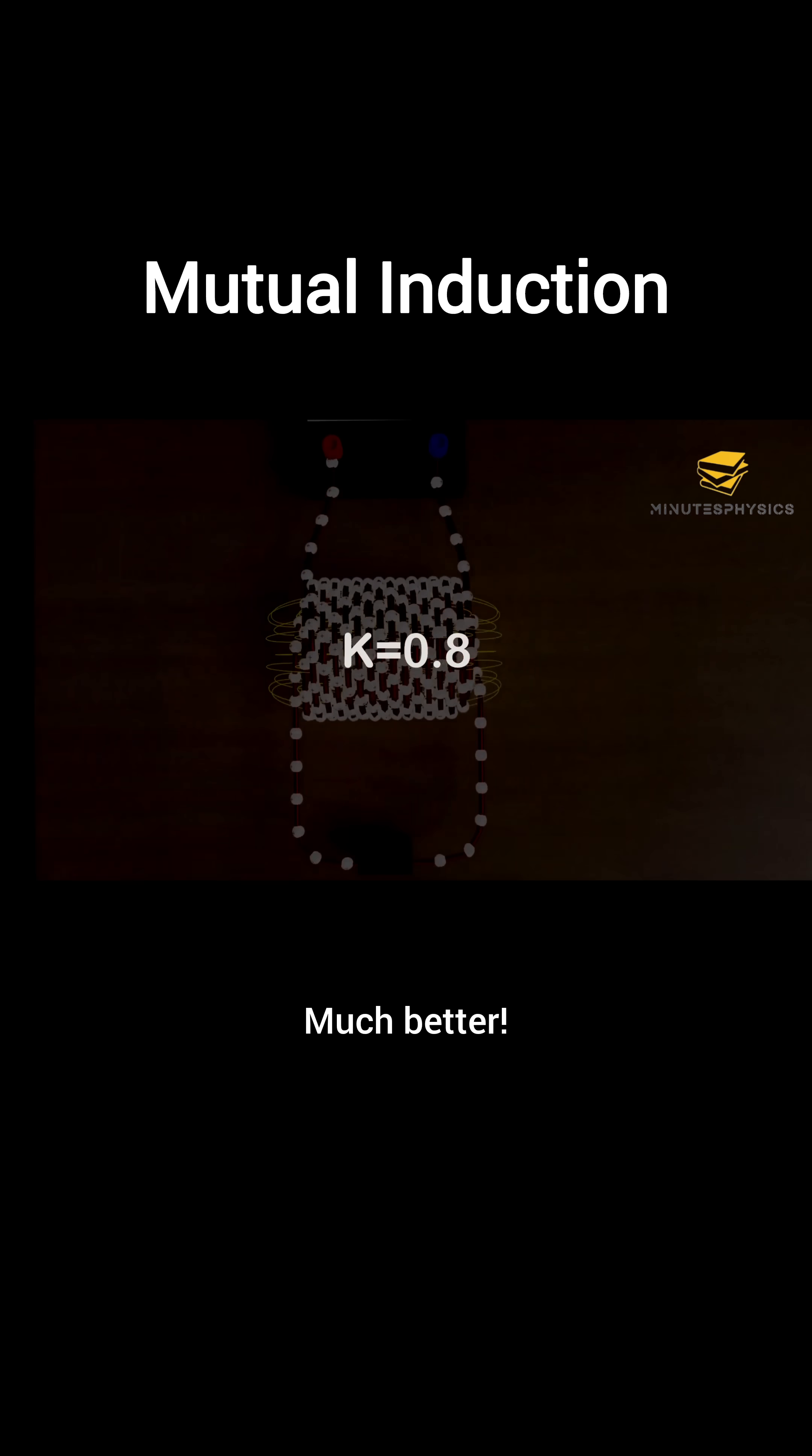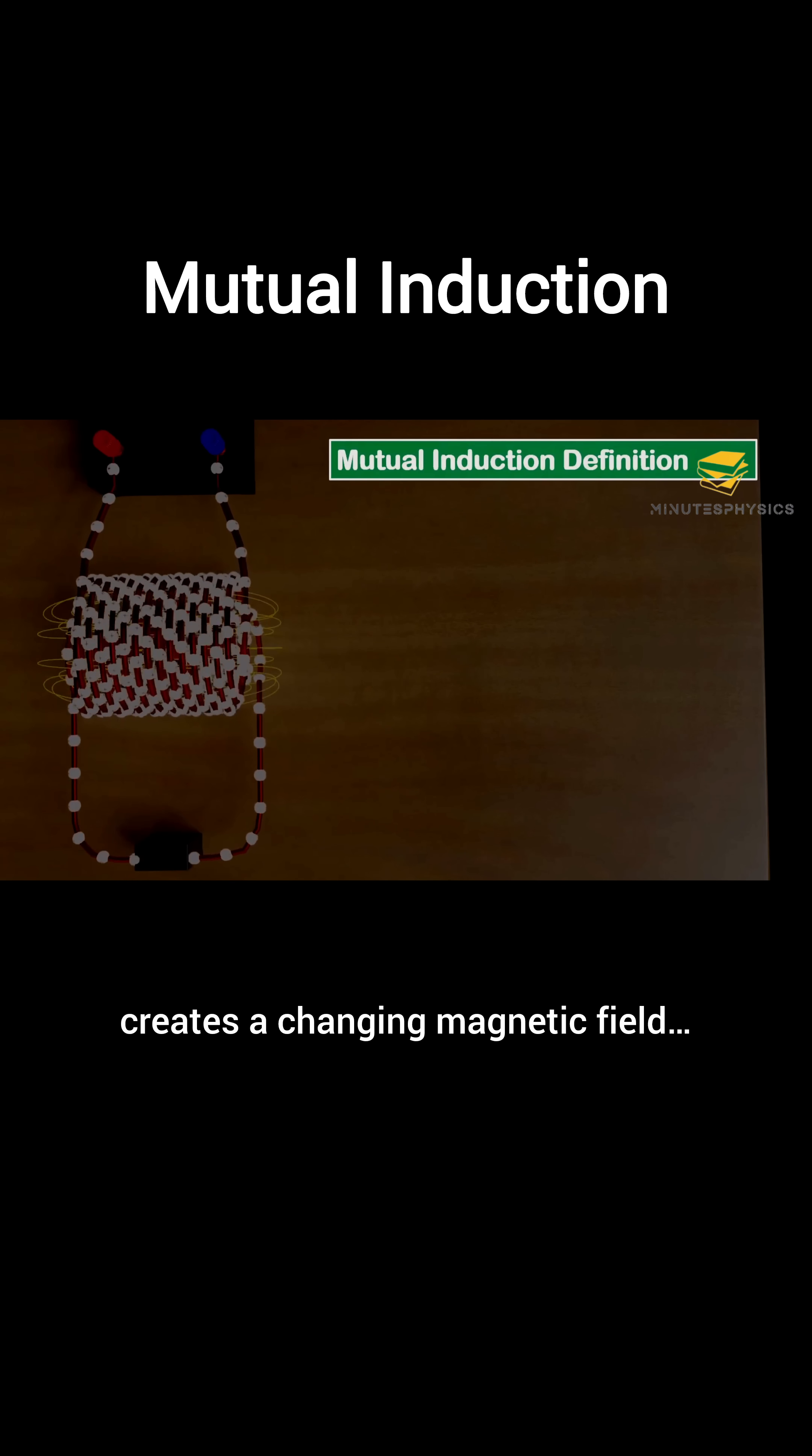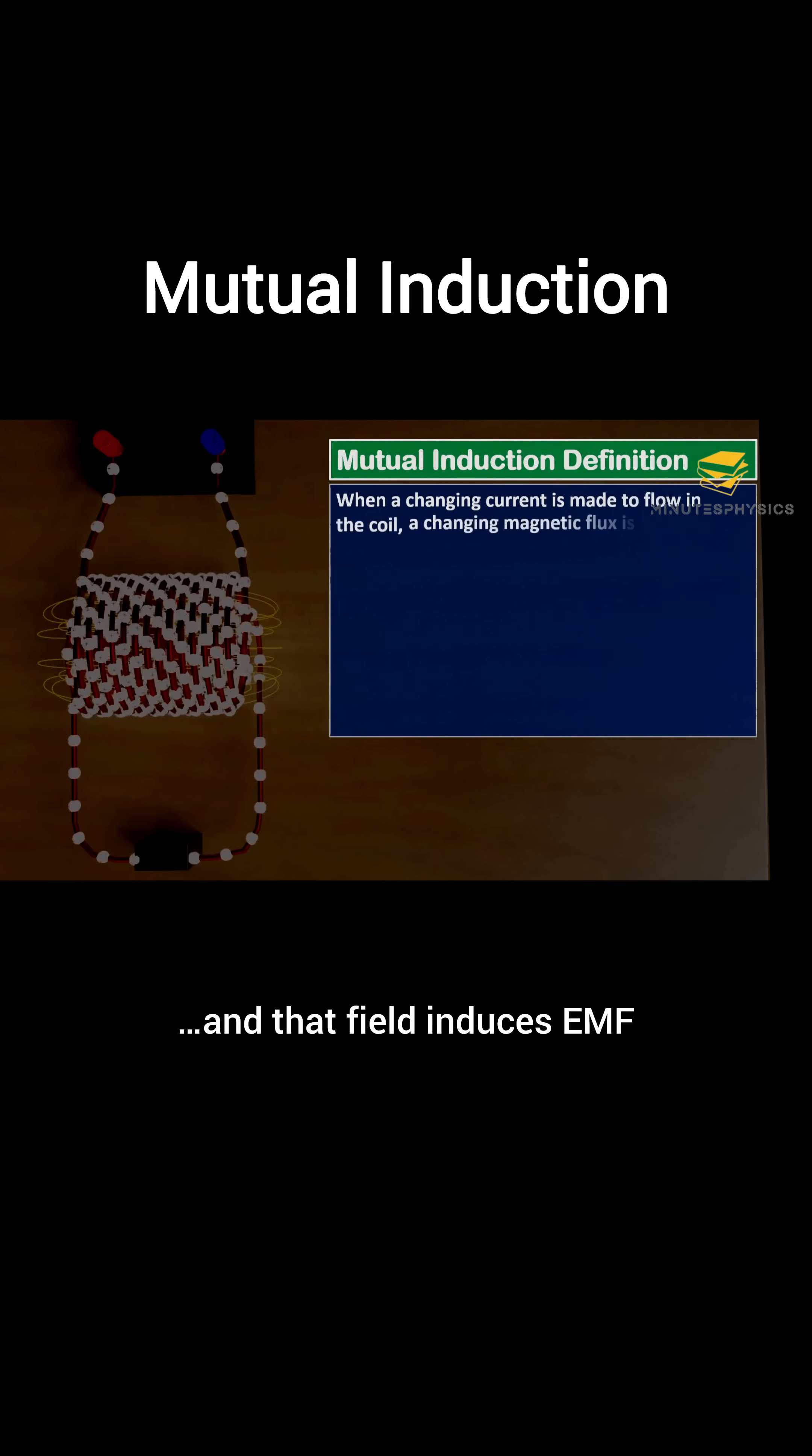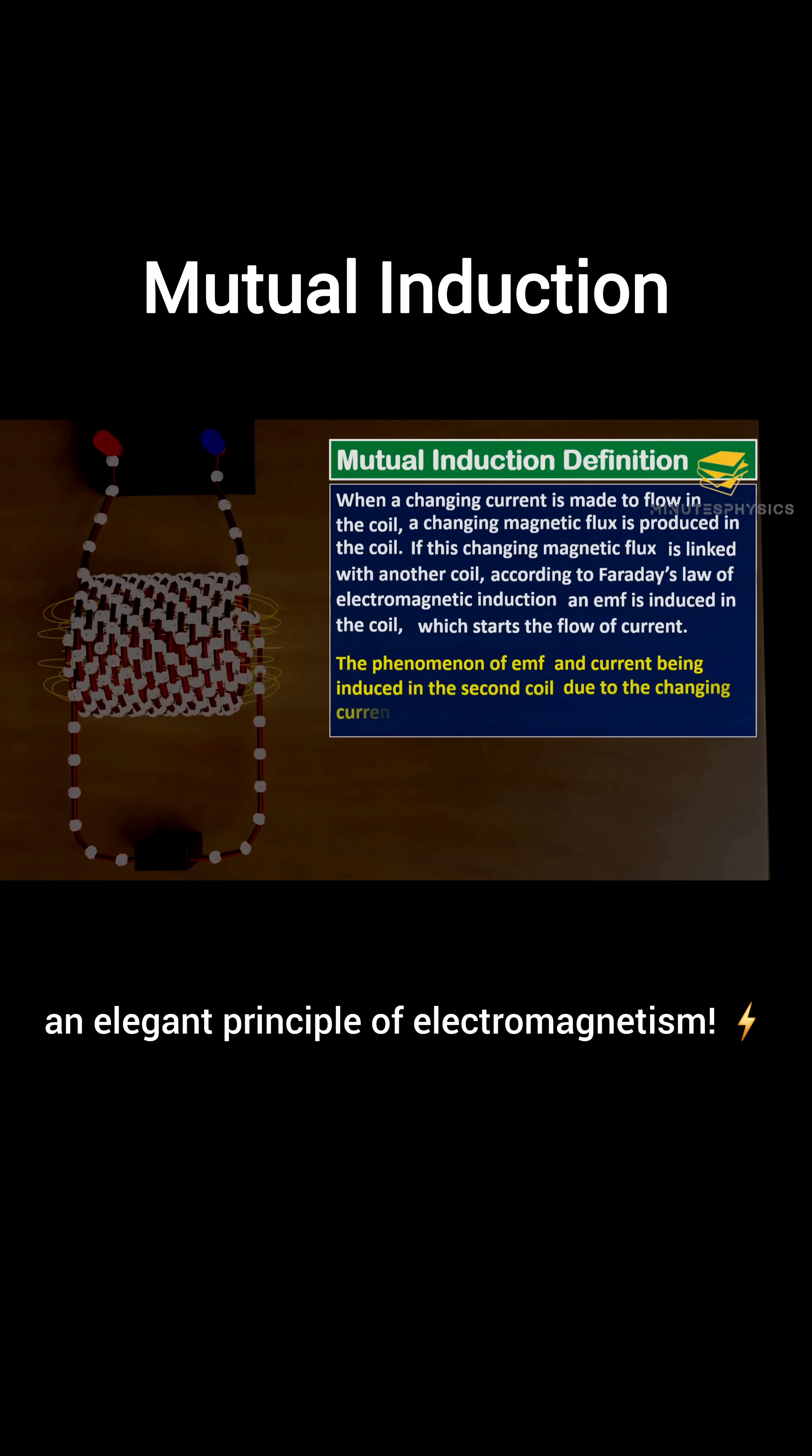So what's mutual induction again? It's when a changing current in one coil creates a changing magnetic field, and that field induces EMF in a nearby second coil. That's mutual induction, an elegant principle of electromagnetism.